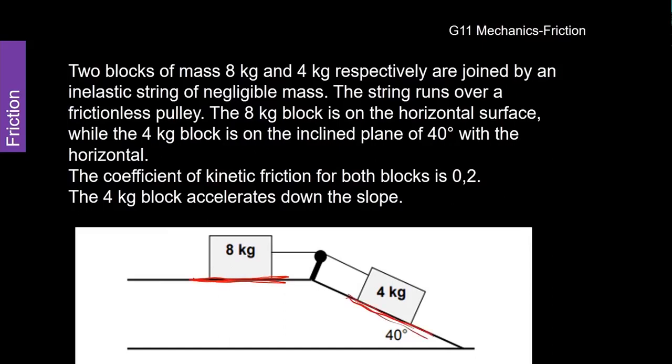And the four kilogram block is on a slope, okay? They tell us there that it is joined by an inelastic string of negligible mass. That just means it's not going to have any effect on what we're trying to work out. It runs over a frictionless pulley over there. The one, the eight kilogram is on a horizontal surface. The four kilogram is on an inclined plane. You can see here it's 40 degrees.